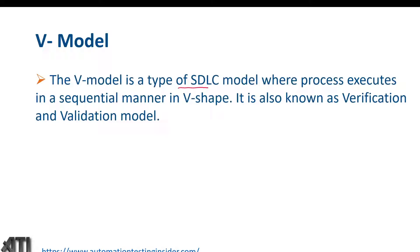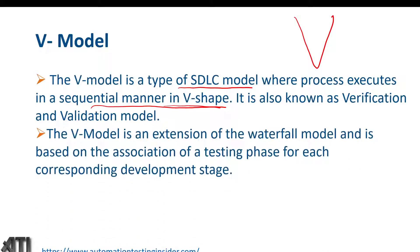The V model is a type of software development lifecycle model where the process executes in a sequential manner in a V shape. It is also known as the Verification and Validation model. The V model is an extension of the waterfall model and is based on the association of a testing phase for each corresponding development phase. The left side of the V is the software development lifecycle and the right side is the software testing lifecycle — one belongs to the development team and the other to the testing team.